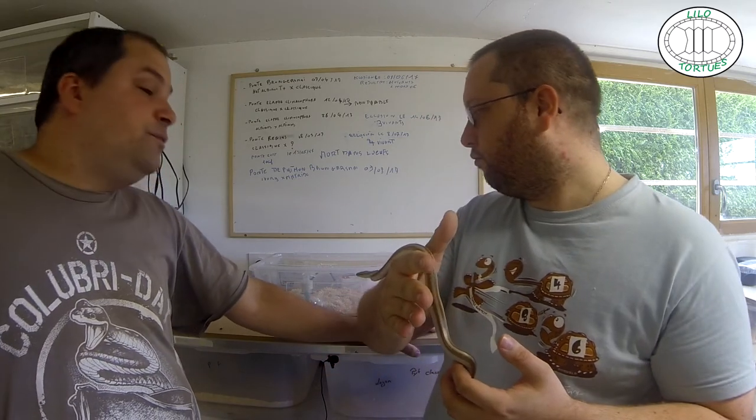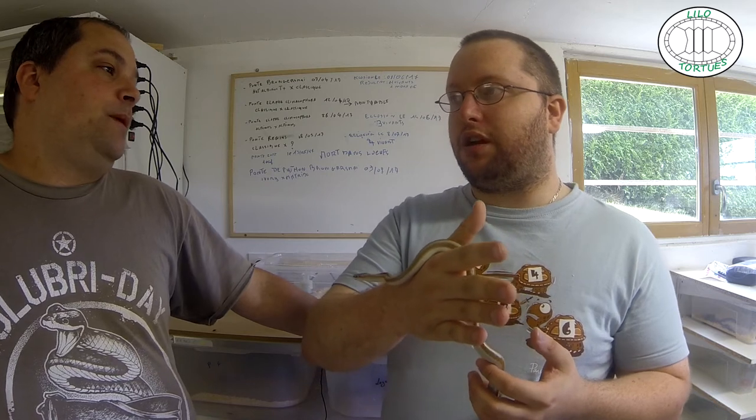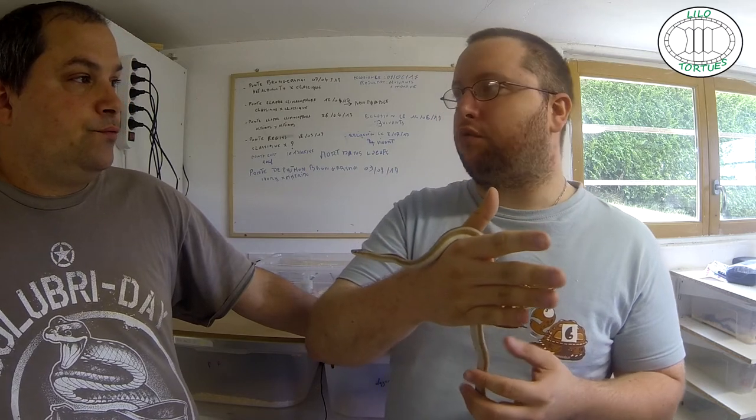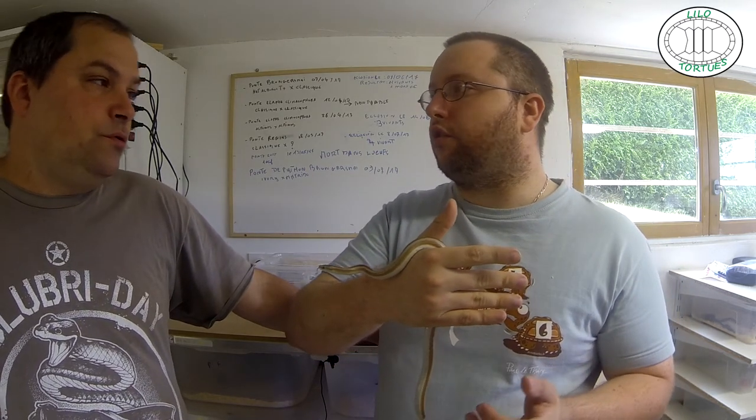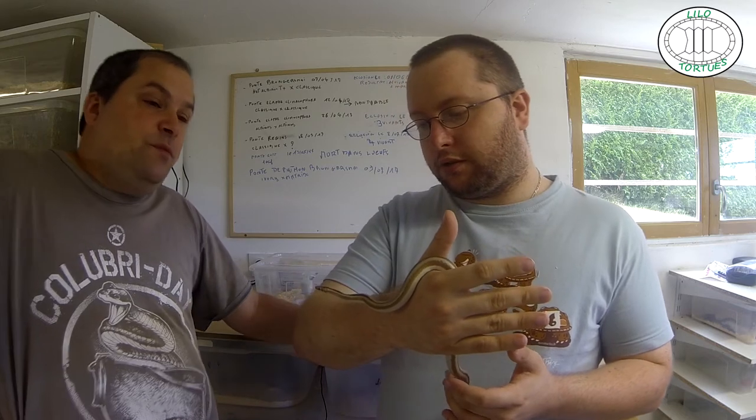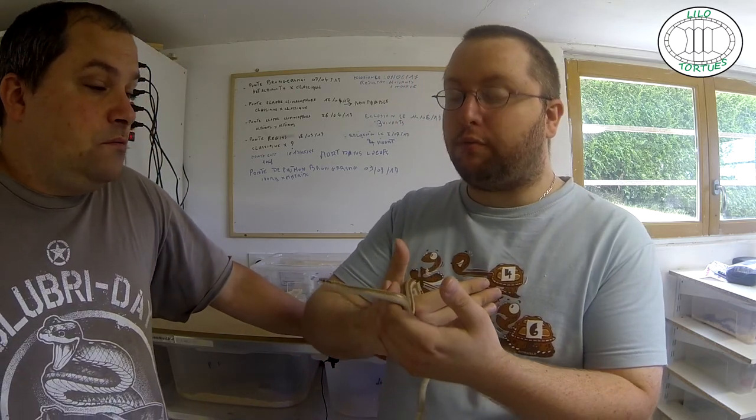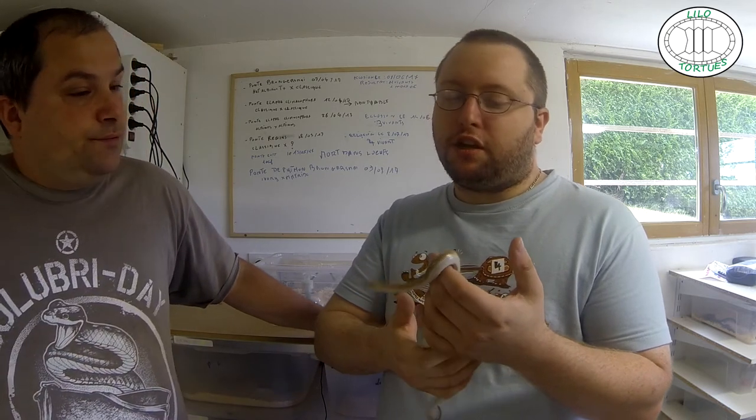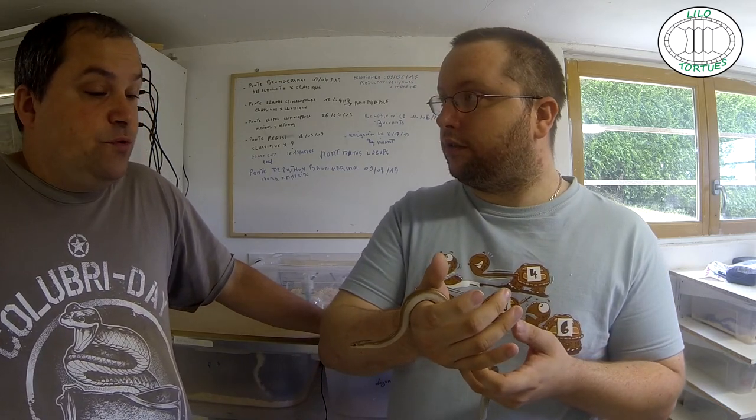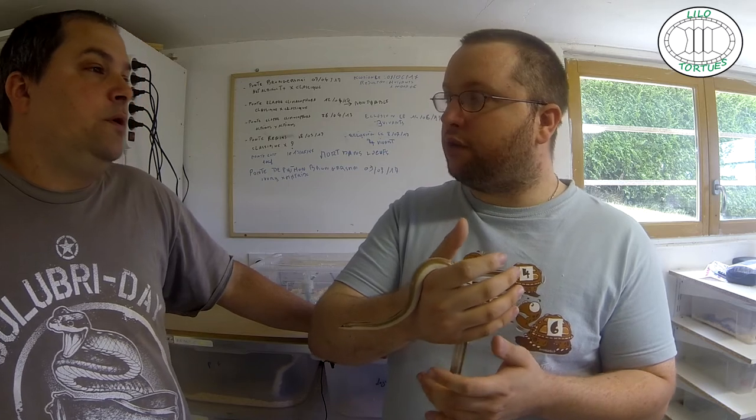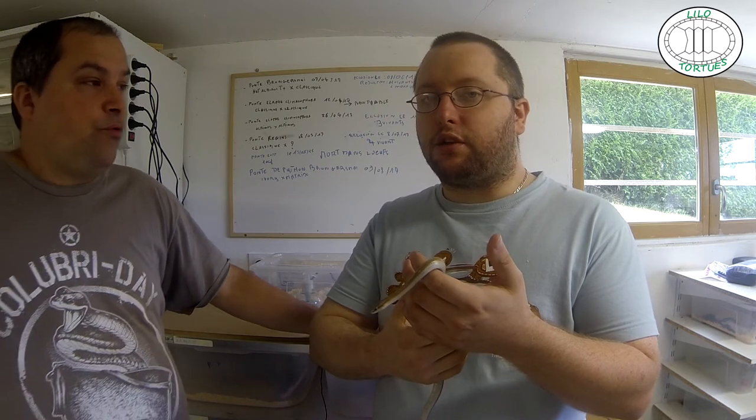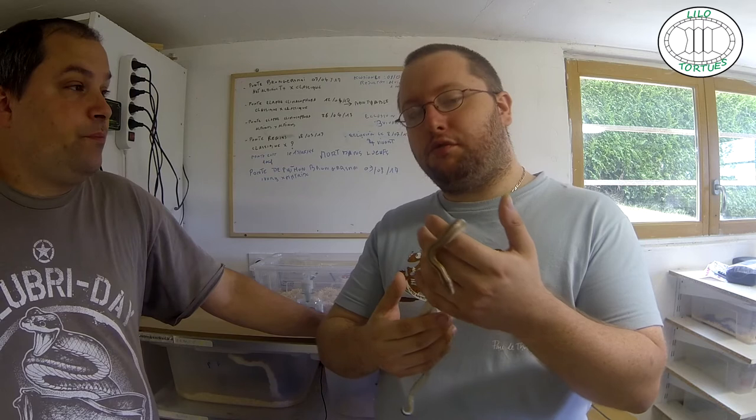C'est une espèce comme ça, en quarantaine. Le terra, vu que c'est fouisseur, pas un terra grand en hauteur. Vu que c'est une taille de 90 cm, on peut s'orienter sur un 60x45x30, à limite voire même un 90 cm. Ça prend plus de surface au sol. Il y a des spécimens qui peuvent peut-être dépasser les 90 cm quand même. Certaines espèces aiment des terras grands, d'autres plus petits. C'est à vous de juger par rapport à l'animal et ses besoins.